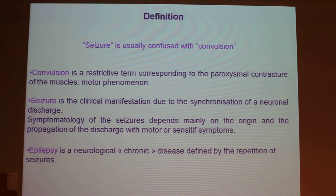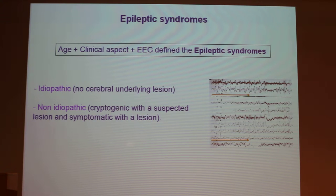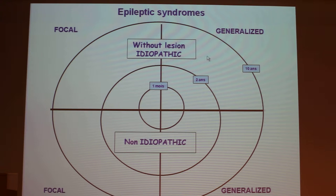Epilepsy is a neurological chronic disease defined by the repetition of seizures. Age, clinical aspect, and EEG define the epileptic syndromes. When it is idiopathic — meaning no cerebral underlying lesion — we say idiopathic epilepsy. When it is non-idiopathic, it is cryptogenic with a suspected lesion. So here you have the epileptic syndrome with focal or generalized epilepsy: without lesion (idiopathic), and with lesion (non-idiopathic).